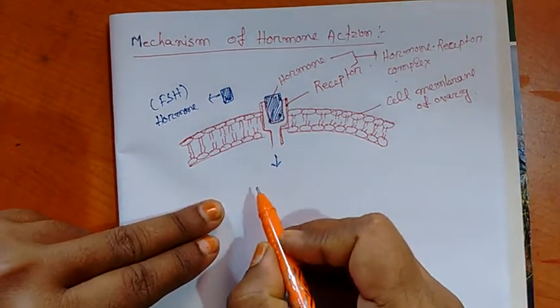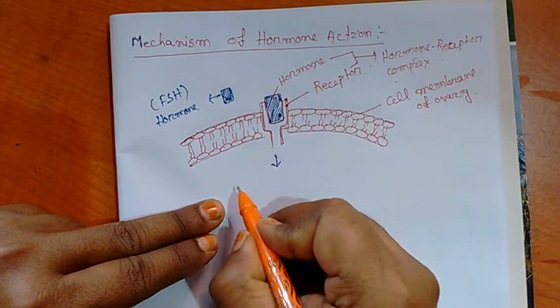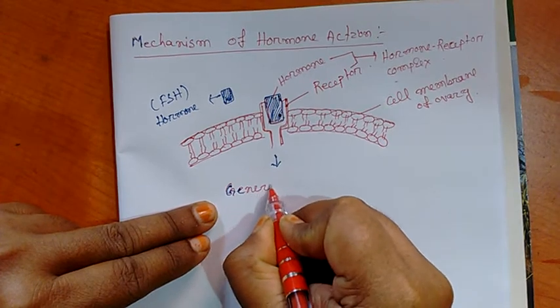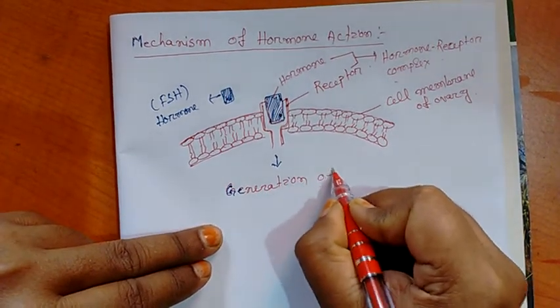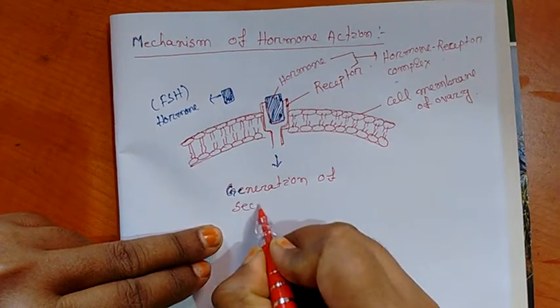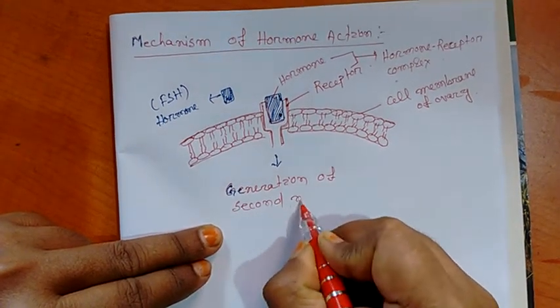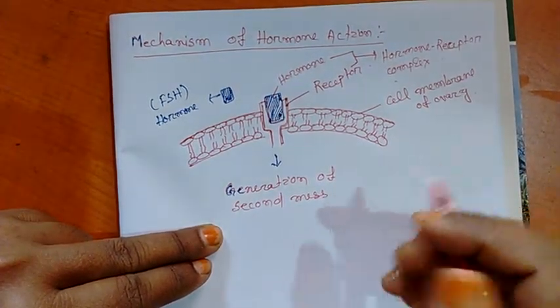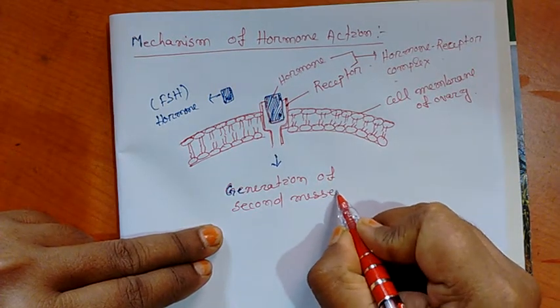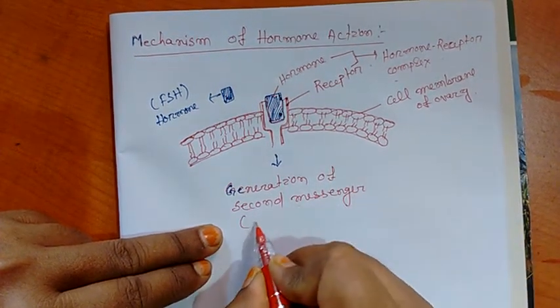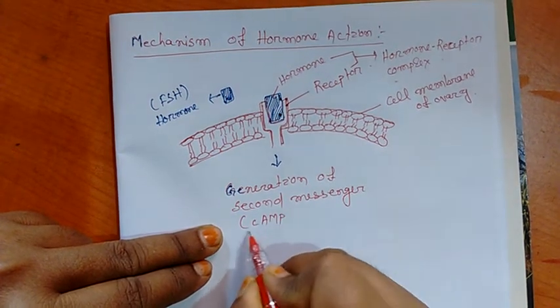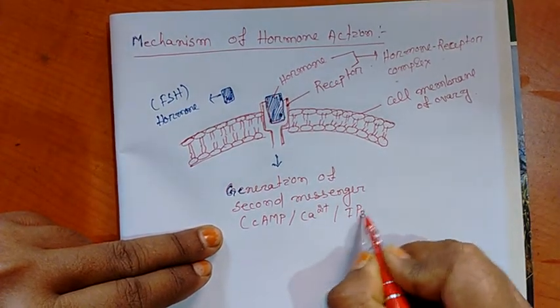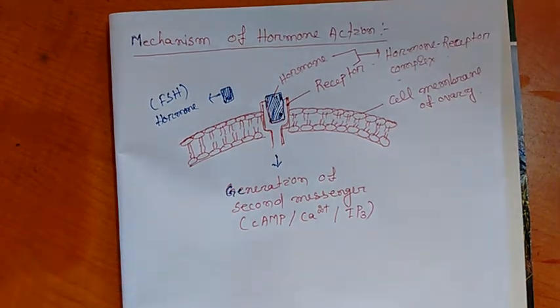Then it generates second messenger. That is generation of second messenger which is bringing the hormone into the cytoplasm of the cell. Second messengers such as cAMP, that is cyclic AMP, or calcium ions, or IP3. These may be second messenger.